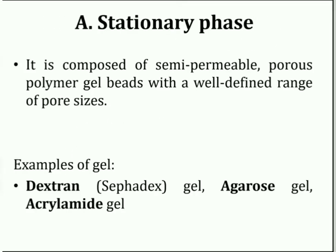The first major component of the instrument is the stationary phase. The stationary phase used in gel permeation chromatography is composed of semi-permeable porous polymer gel beds with a well-defined range of pore sizes. A stationary phase should be chemically inert, mechanically stable, and should have an ideal and homogeneous porous structure. A uniform particle and pore size is also a necessity.